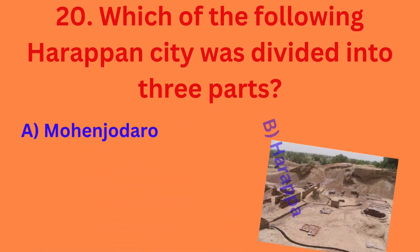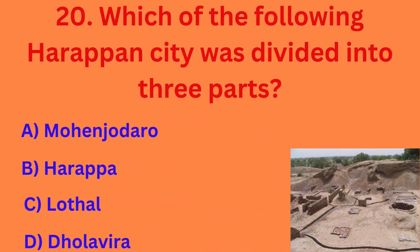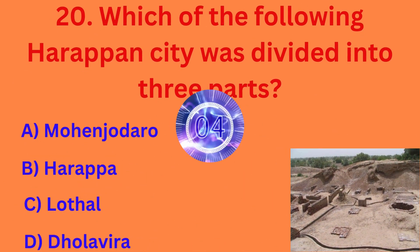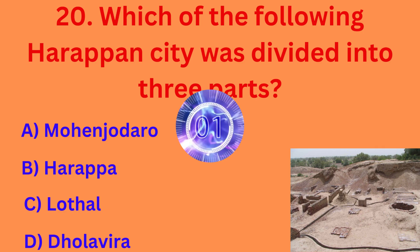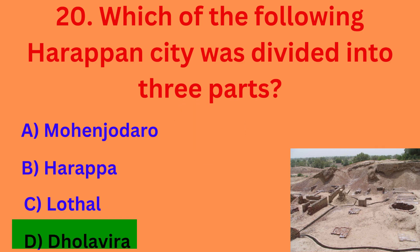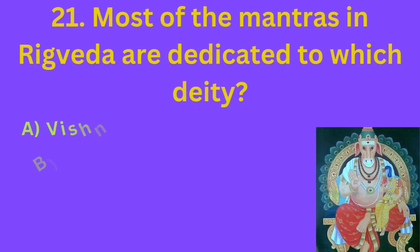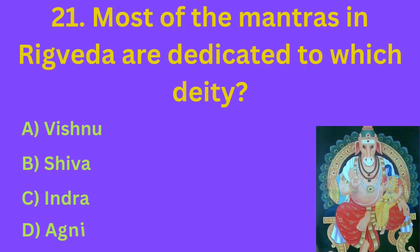Which of the following Harappan cities was divided into three parts? The correct answer is option D: Dholavira.